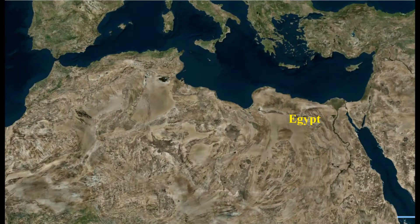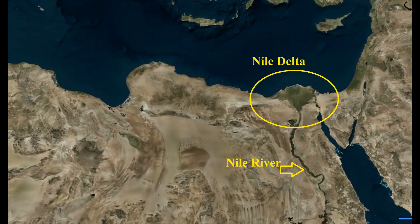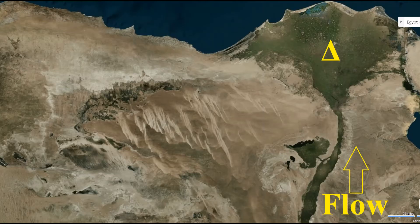We're going to start from space and zoom in. You don't have to zoom in too far from a satellite image to see the green band of the Nile Valley as it runs through Egypt into the Nile Delta to the Mediterranean Sea. An important feature of the Nile River is that it flows from south to north and fans off into a delta — it's called a delta because it actually resembles the Greek letter delta.